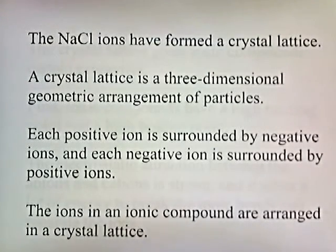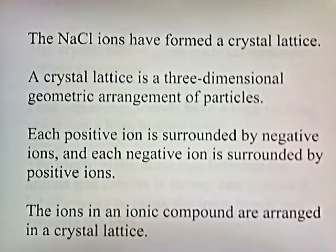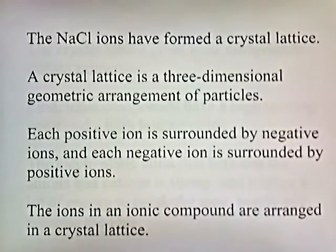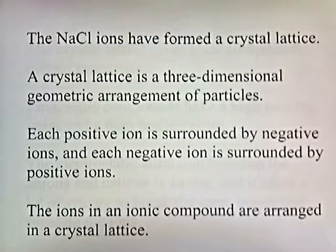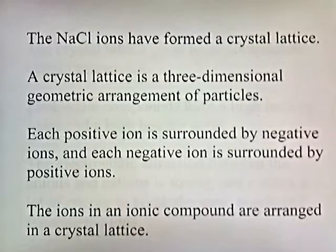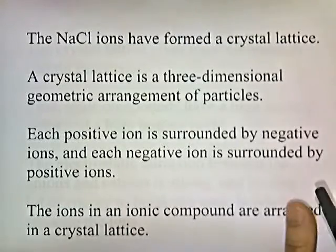The NaCl ions have formed something called a crystal lattice. A crystal lattice is a three-dimensional geometric arrangement of particles. Each positive ion is surrounded by negative ions, and each negative ion is surrounded by positive ions. The ions in an ionic compound are arranged in a crystal lattice.